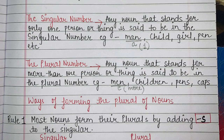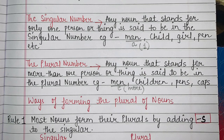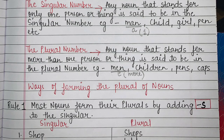Now let's talk about the plural number. Any noun that stands for more than one person or thing is said to be in the plural number. Examples: men, children, pens, caps, etc. When we say 'men,' it means we are talking about more men in number. When we say 'man,' it means a single man, and 'men' means more than one man.